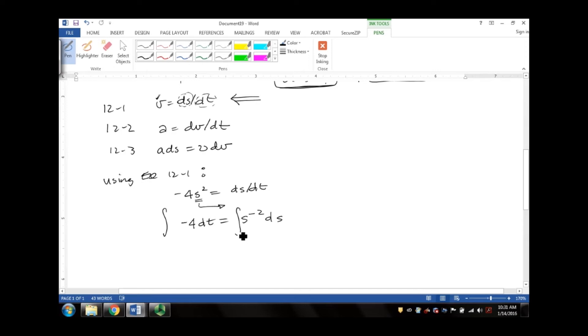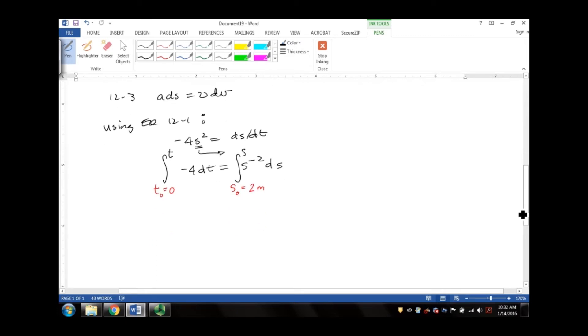Now this is where a common mistake will occur. We need to recognize that at time t₀, it's zero, but the initial position at time t₀ actually equals 2 meters. We're going to keep the upper limit generic and the upper limit generic for position as well. And then now we can go ahead and integrate this equation.